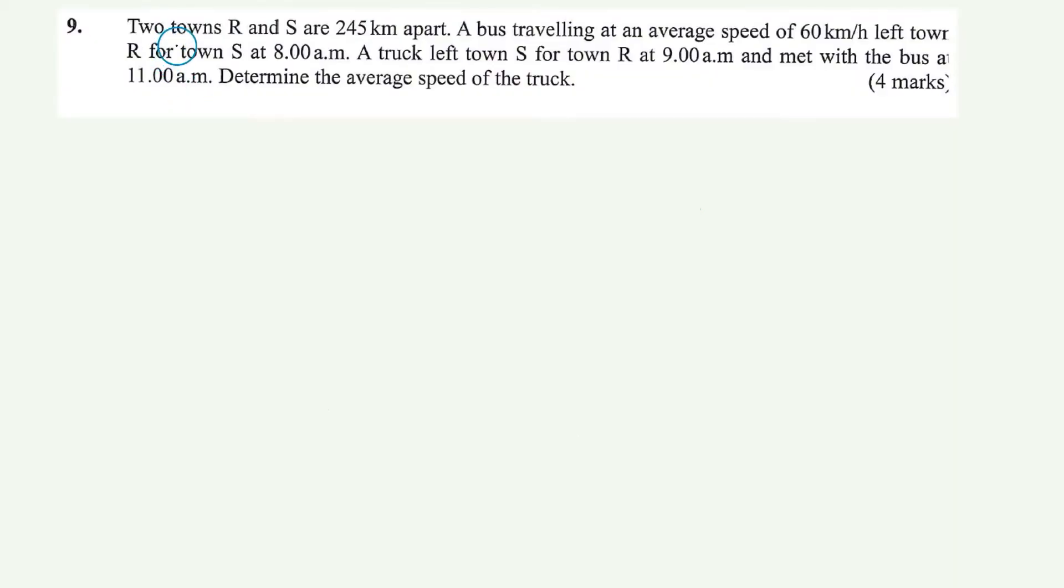So we are told two towns, R and S, are 245 km apart, a bus traveling at an average speed of 60 km per hour.